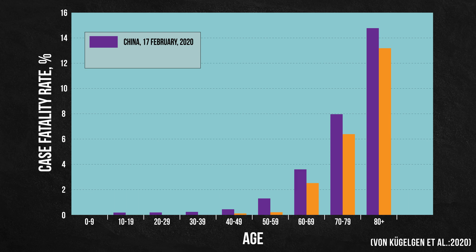These orange bars indicate the COVID-19 case fatality rates in Italy, reported on March 9, 2020. For every age group, the case fatality rates in Italy were lower than those in China. So which country do you think had a higher total case fatality rate? Surprisingly, it was Italy.